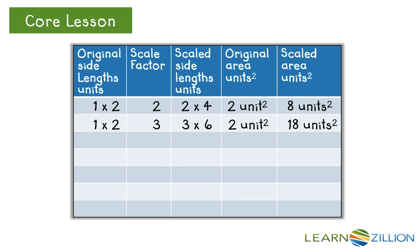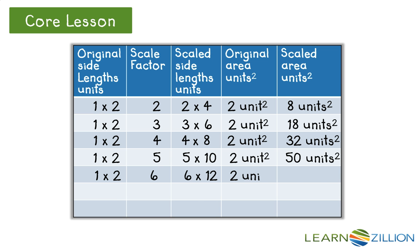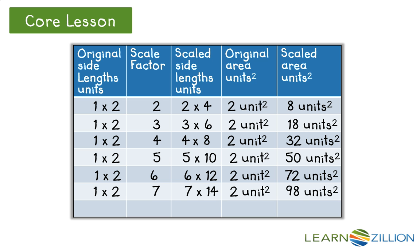If we continue on with this pattern, increasing the scale factor by 1 each time and generating the scaled area by the scaled length and width, we can organize this data in a table to look for patterns. Notice how the scaled area increases by a much larger amount each time when the scale factor increases by 1. The scaled area is not the original area multiplied times the scale factor. The original area of the rectangle is 2, and none of the scaled areas equal the original area multiplied times the scale factor used on each rectangle.